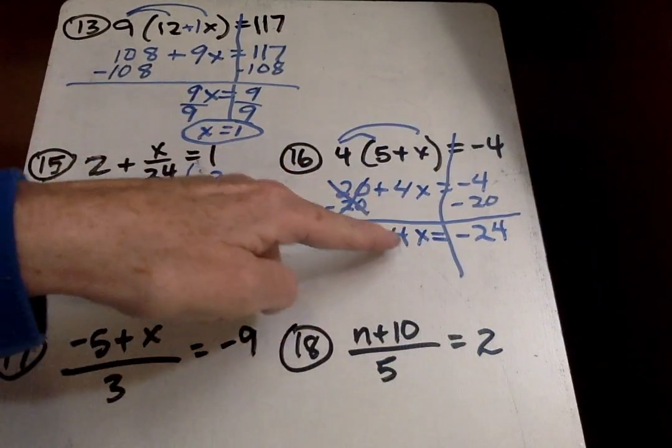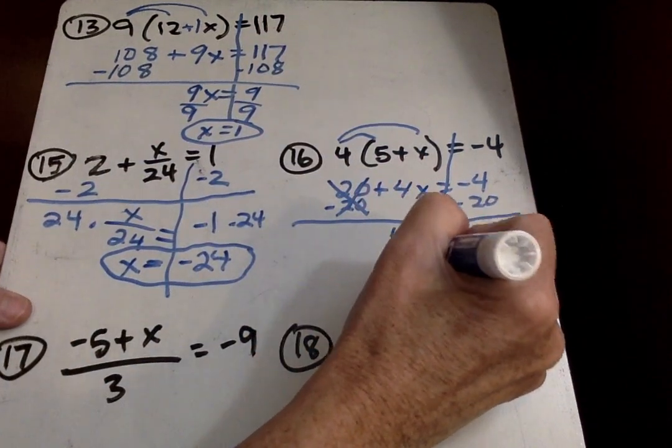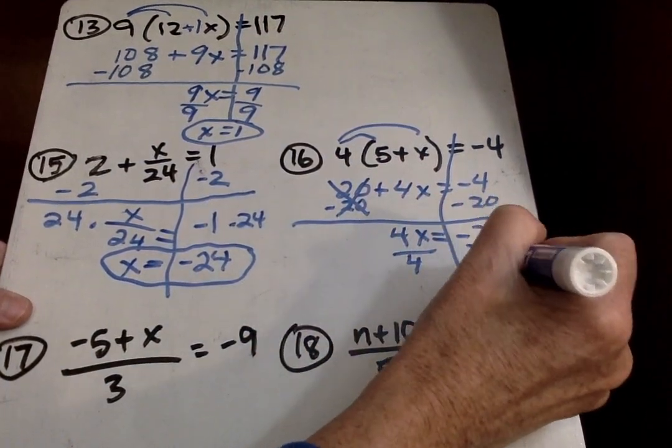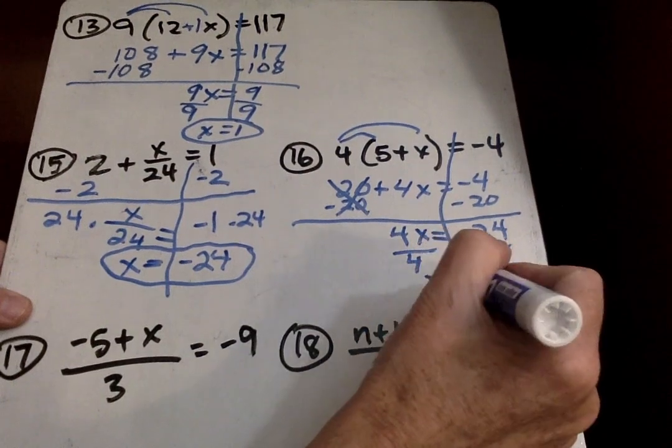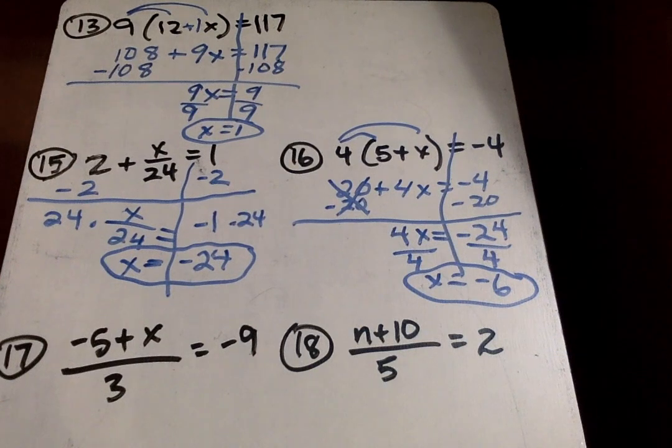And again, solving for X, it's 4 times X. So I do the inverse operation. So X equals negative 6.